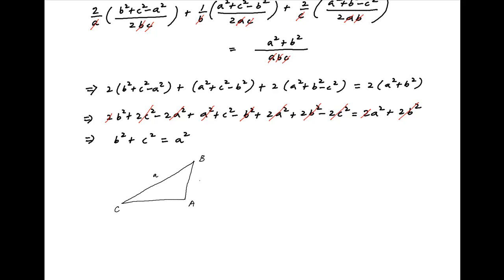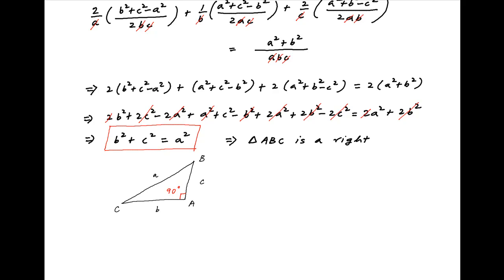Small a, b, c are the sides opposite to the vertices capital A, B, C respectively. The result b² + c² = a² derived above can be true only if angle A = 90°, and so by Pythagoras' theorem b² + c² = a². Therefore triangle ABC is a right-angled triangle where angle A = 90°, and this is the required answer.